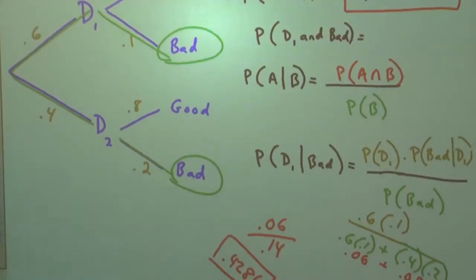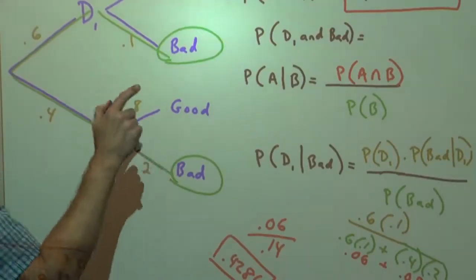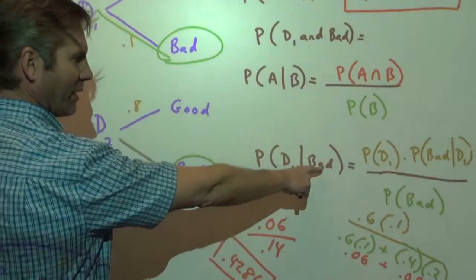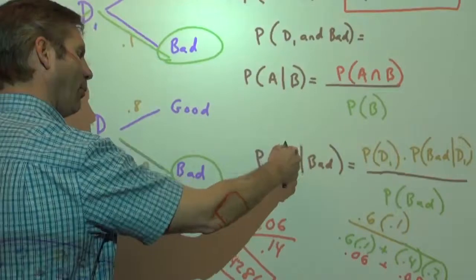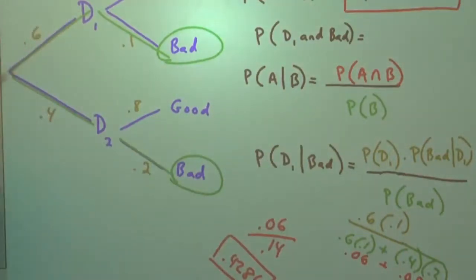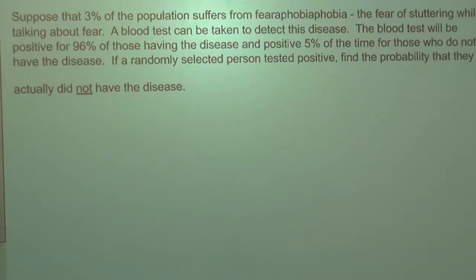That is our conditional probability for a disease-type problem. That is our probability that, knowing you selected a carton that was bad, what's the probability it came from Dairy 1 — and there it is. That was just a quick glance, but now let's do a problem in its entirety. This is an actual disease problem — read that and then let's proceed with it.